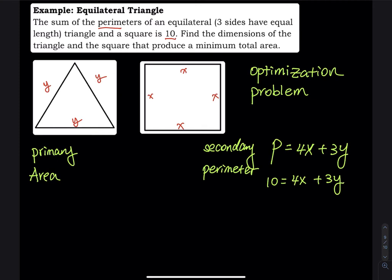The primary equation is the total area — the sum of the areas of the two figures. The area of the square is side times side, which is x times x, giving x squared.